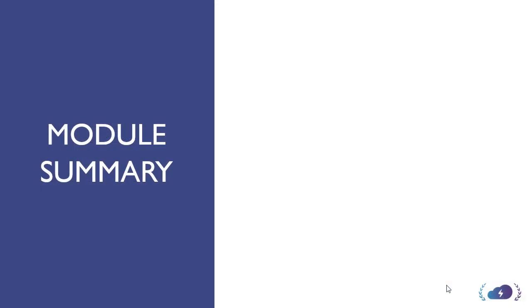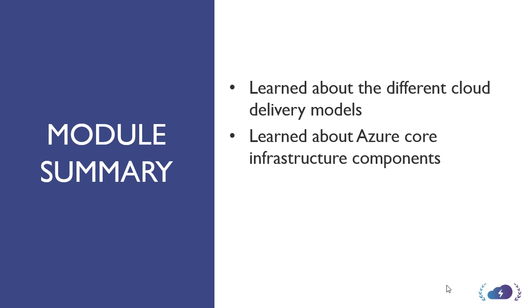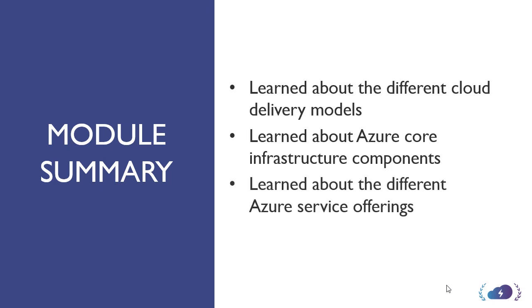That brings us to the end of this module. Hopefully you got a good overview of Azure, and this should give you the fundamentals you need to get going — particularly for the certification and Azure knowledge as a whole. In particular, you learned about the different cloud delivery models: IaaS, PaaS, and SaaS, and the differences between them. You also learned about core infrastructure for Azure — regions, VNets, virtual machines, and resource groups. In addition, you learned about the other service offerings available in the Azure environment.